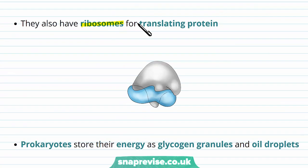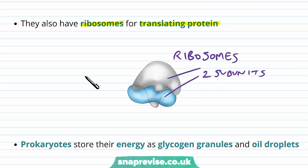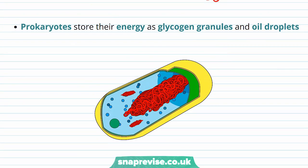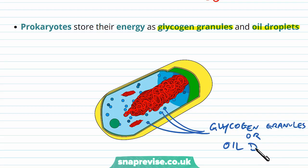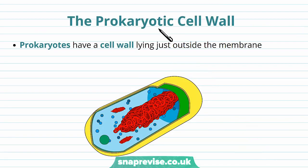Prokaryotes have ribosomes, which are important for translating proteins. The ribosome is made of two subunits, just like it is in eukaryotes, and its function is to read mRNA and from this create a polypeptide or protein. The way they store energy inside the cell is as glycogen granules, much like our cells as animals, and also in oil droplets. Throughout the cytoplasm we see these suspended droplets which are either glycogen granules or oil droplets.